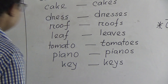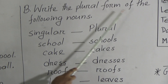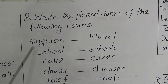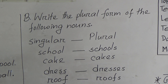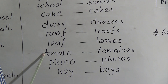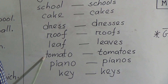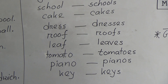So let's read again. Write the plural form of the following nouns — singular and plural: school, schools; cake, cakes; dress, dresses; roof, roofs; leaf, leaves; tomato, tomatoes; piano, pianos; key, keys.